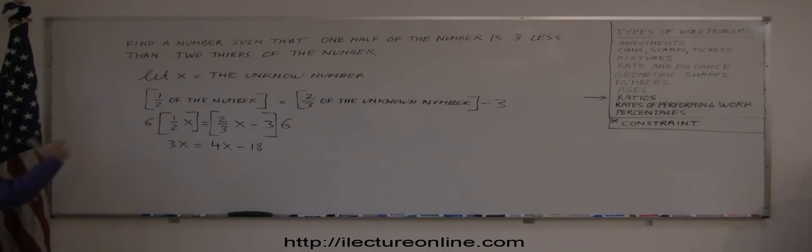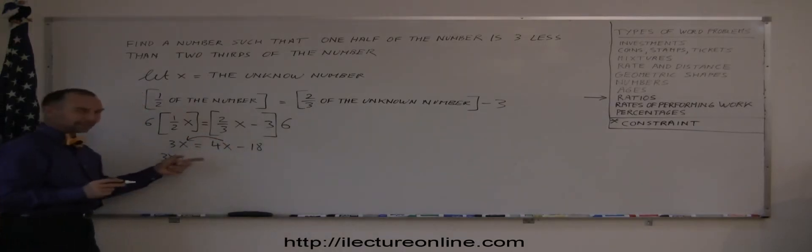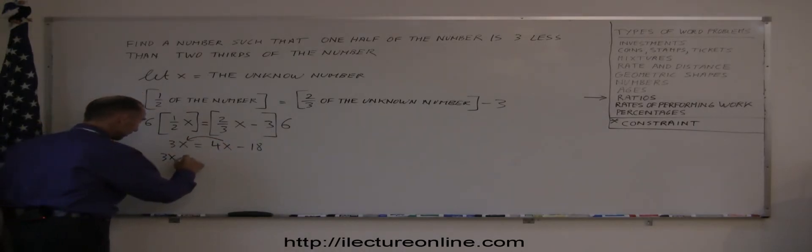The next step is to move all the terms with x to one side. Everything else stays on the other side, so we have three x. When the four x goes across the equal sign, don't forget to change the sign, that becomes minus four x equals minus eighteen.